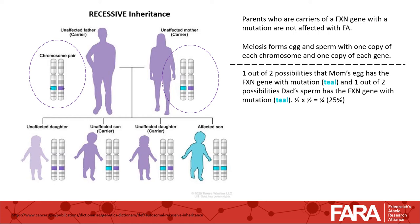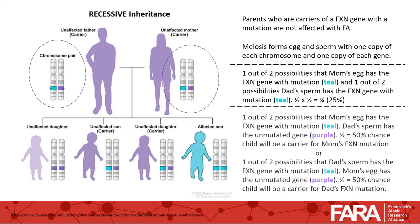The two children in the middle are carriers for frataxin genes with a disease-causing mutation. They are like their parents — unaffected by FA. There is a 50% chance for this inheritance pattern to occur. Here's the math: there is one out of two possibilities that mom's egg has the frataxin gene with the mutation, and dad's sperm has the unmutated gene. A one-half chance of the mutated gene occurring means a 50% chance the child will be a carrier for mom's frataxin mutation. The opposite could happen for dad — there is one out of two possibilities that dad's sperm has the frataxin gene with the mutation, and mom's egg has the unmutated gene. So there is a 50% chance that the child will be a carrier for dad's frataxin mutation.